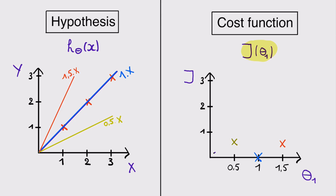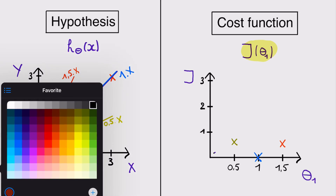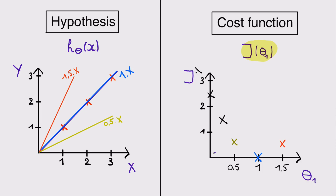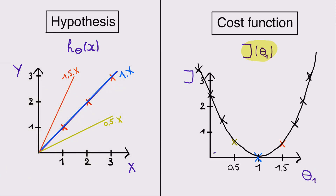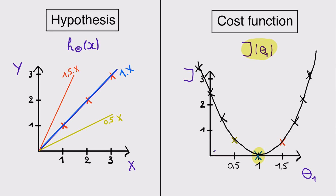For every different value of theta 1 we get a different hypothesis and thus a different line through the data. If we calculate all possible values for theta 1, we get a continuous cost function. This function tells us which value of theta 1 gives the hypothesis that fits best through the data — all we have to do is find the minimum. For this example, theta 1 equal to 1 is clearly optimal with a cost of 0, meaning the predicted values equal the correct answers in the training set, so h equals y for all training examples.